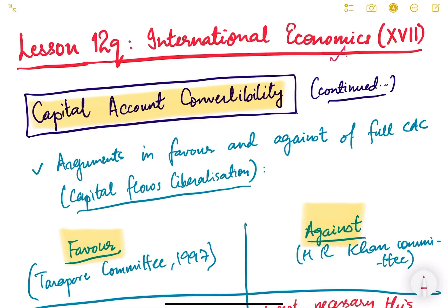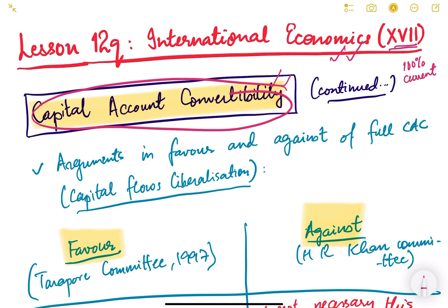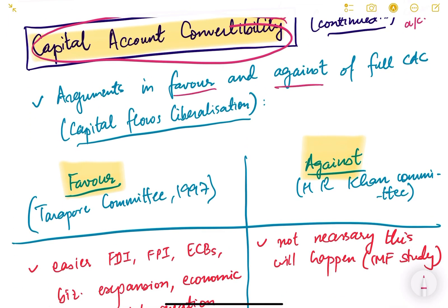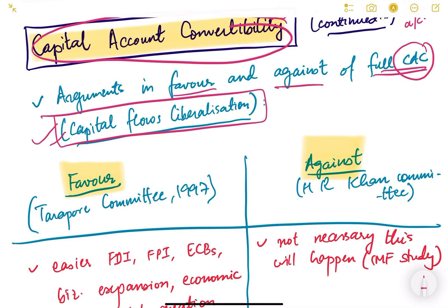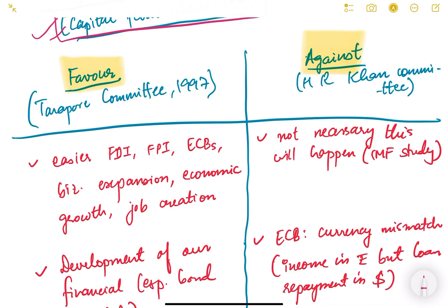Hello friends, let us continue international economics. This is the 17th video of this particular lesson. In this video we will continue discussing capital account convertibility. In the previous video we saw the meaning of convertibility — we have 100% convertibility for current account, but only partial convertibility for capital account. Now we will look at the arguments in favor and against full capital account convertibility, also known as capital flow liberalization.